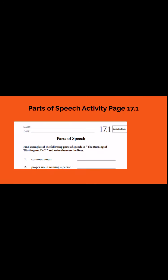Next, we have our parts of speech activity page. This is more of a review — it's all about common nouns, proper nouns, and verbs. You should all know those by now, boys and girls. Common noun: person, place, or thing. Proper noun: naming a person or a place. And a verb is an action word.